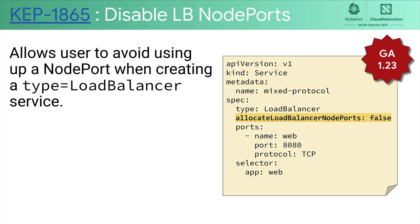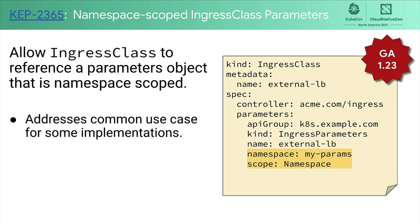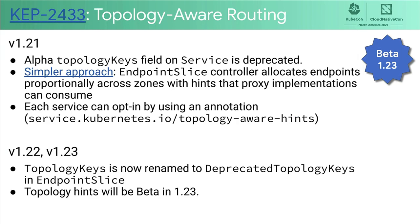A couple of smaller improvements have graduated to stable. Disable LB node ports is now GA, which lets the user avoid allocating node ports when creating a type load balancer service — this is GA in 1.23. Ingress class can now reference a parameter object that is namespace scoped, taking care of common use cases for in-cluster proxy deployments and self-service ingress deployments. The new topology aware routing feature is now beta, along with a deprecation of the old topology keys based API.